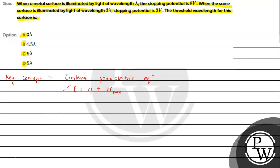If K_max is zero, the electron is just emitted but has no further energy. In that situation, E equals the work function φ. This gives the threshold frequency, where hν₀ equals φ. We can rewrite this as φ equals hc divided by lambda naught. Now we can also write that the maximum kinetic energy equals eV₀, where V₀ is the stopping potential.